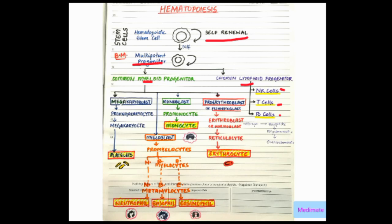So we have, for the platelets, megakaryoblast; for the granulocytes, myeloblast; for the monocytes, monoblast; and for the erythrocytes, proerythroblast.